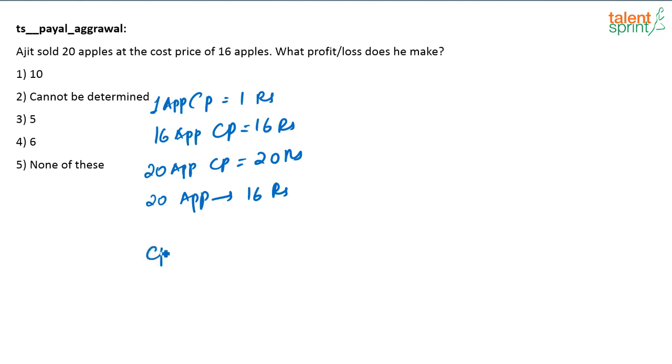Actually, cost of 1 apple is 1 rupee. It is easier to write it like this. Selling price of 1 apple is 16 by 20 or 4 by 5 rupees. Or I can say he is losing 1 by 5 rupees. 20 percent is his loss.